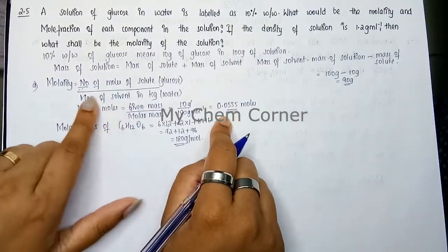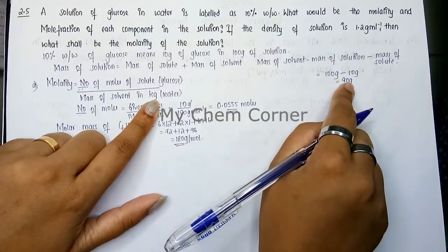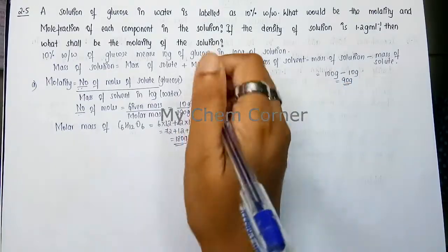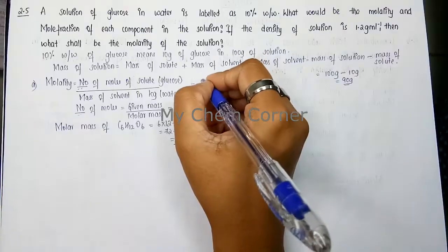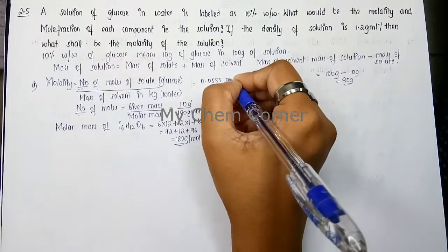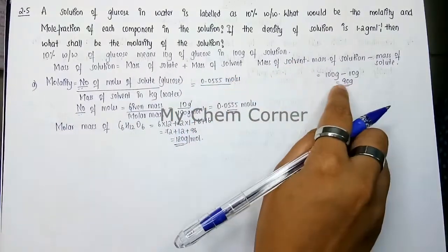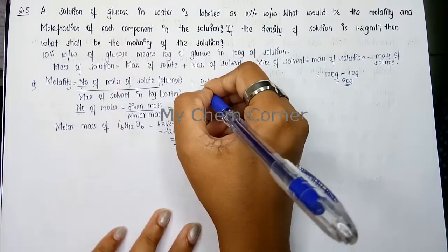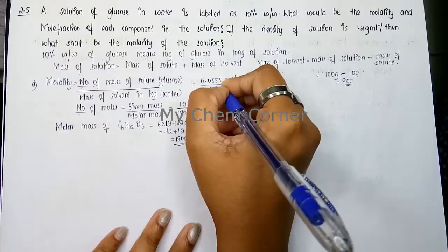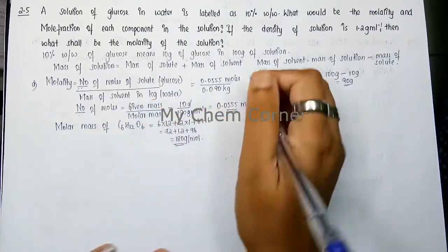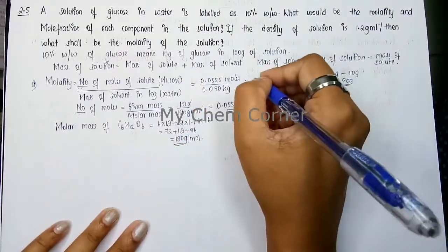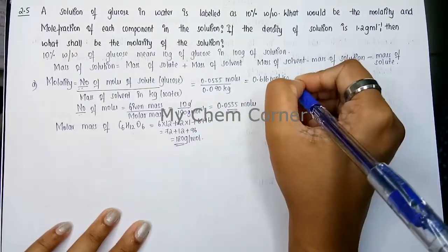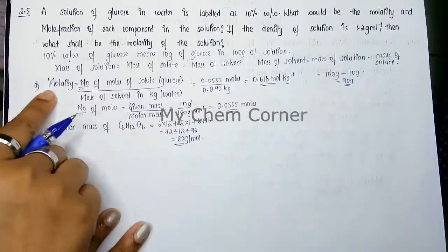Now we have the number of moles. For the mass of solvent in kg, we divide 90 grams by 1000 to get 0.090 kg. Substituting into the molality formula: 0.0555 moles ÷ 0.090 kg = 0.616 mol/kg. That is the molality.